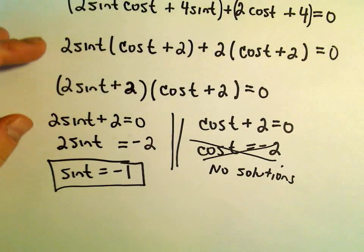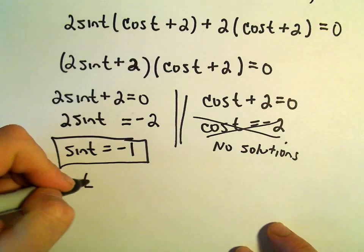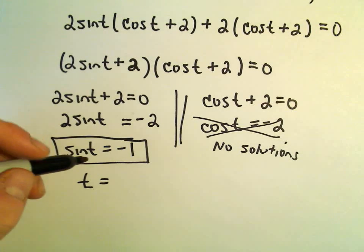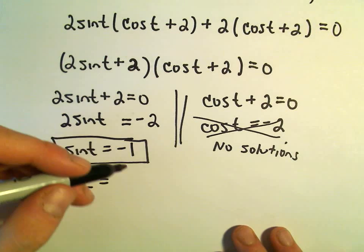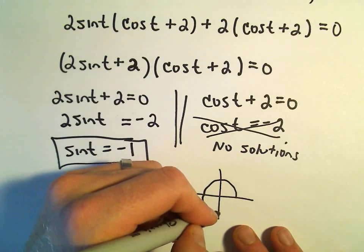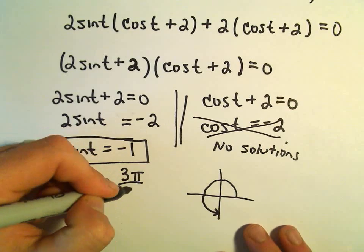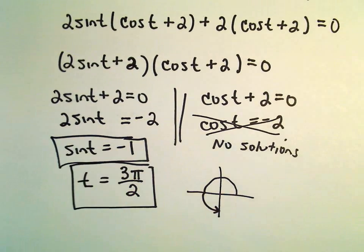Well, we just wanted solutions in the interval 0 to 2 pi. The only angle where sine equals negative 1. So again, sine is the y-coordinate. So sine is going to equal negative 1 at the angle 3 pi over 2. And that would be our lone single solution to this equation.